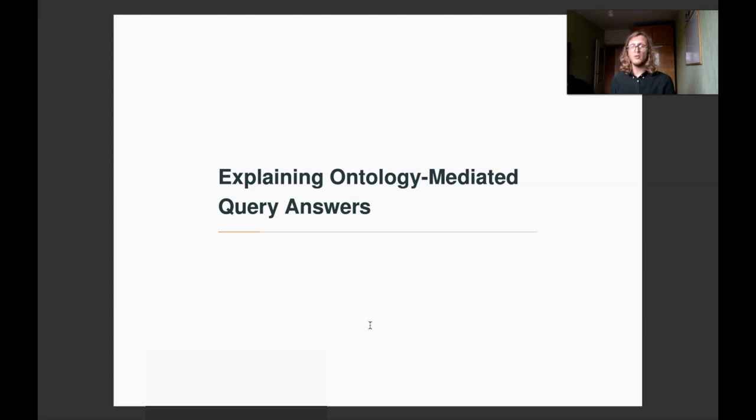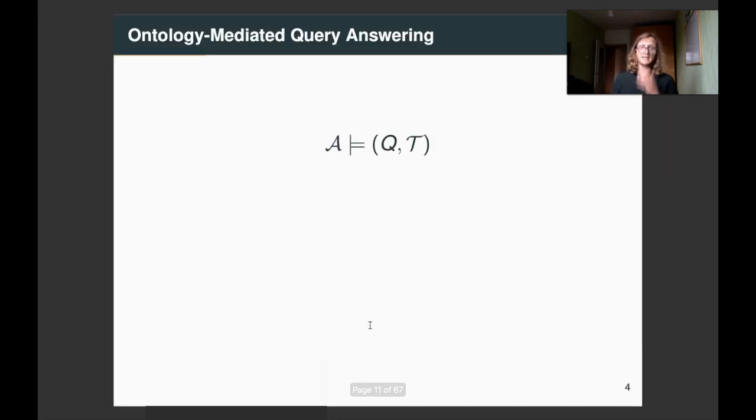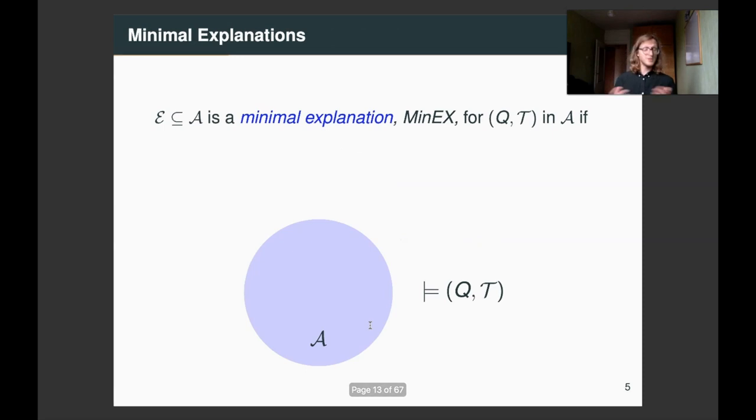So, now we give a brief overview. We say that an A-box entails an ontology-mediated query, which is a query together with a T-box, if and only if, for all models of this knowledge base, A-box and T-box, we have that in that model the query holds.